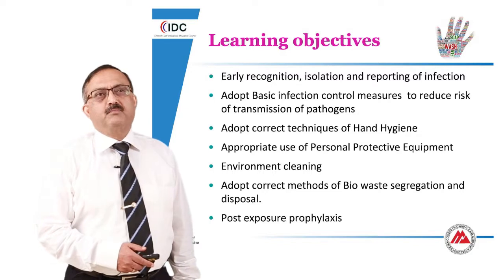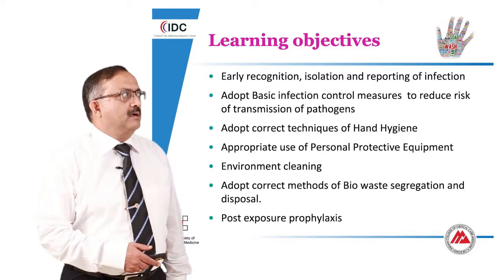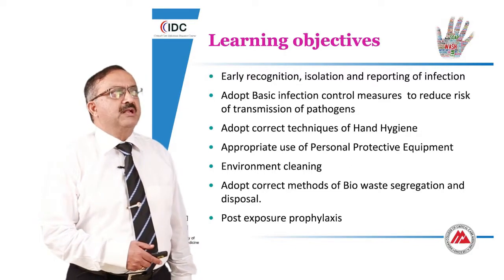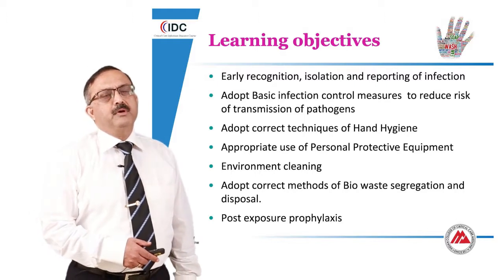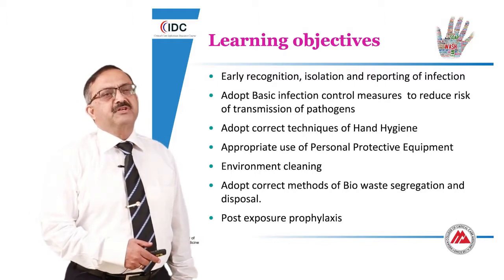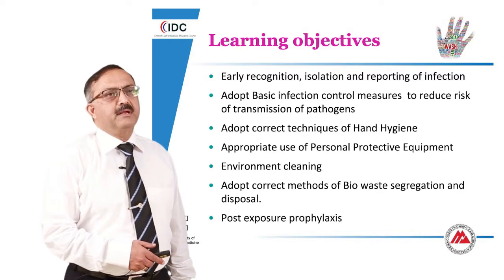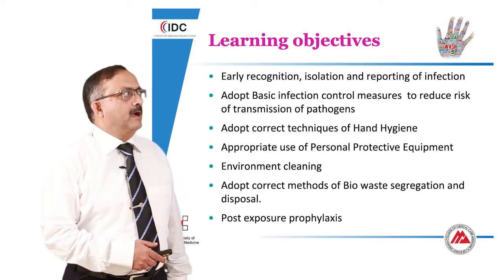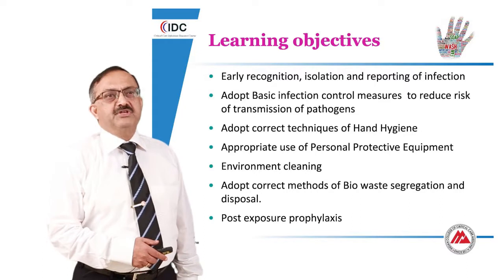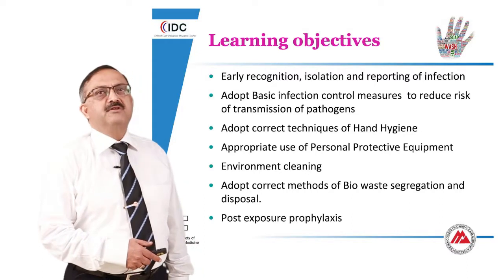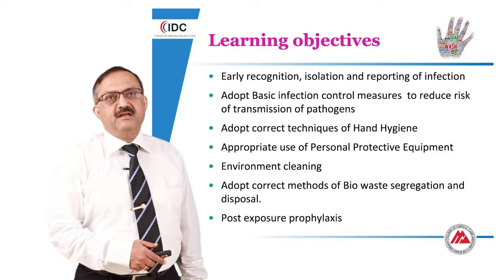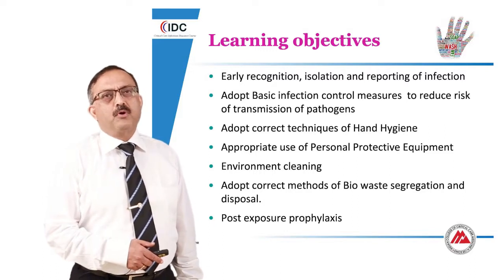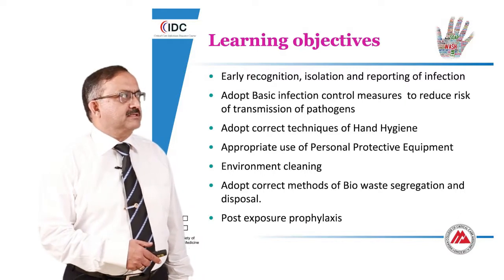The learning objectives for this module are: early recognition, isolation, and reporting of infection. It is very important that you are able to detect or think of infection in certain kinds of patients who are being treated for critical care. Adopt basic infection control measures that will reduce the risk and transmission of pathogens. Adopt correct techniques of hand hygiene, which is the single most important factor that will prevent infection in critical care patients.